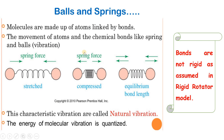We know that molecules are made up of atoms connected by bonds. While dealing with rotational spectroscopy, we had assumed that the bonds are rigid — that is, they are inflexible — and we called it the rigid rotator model.